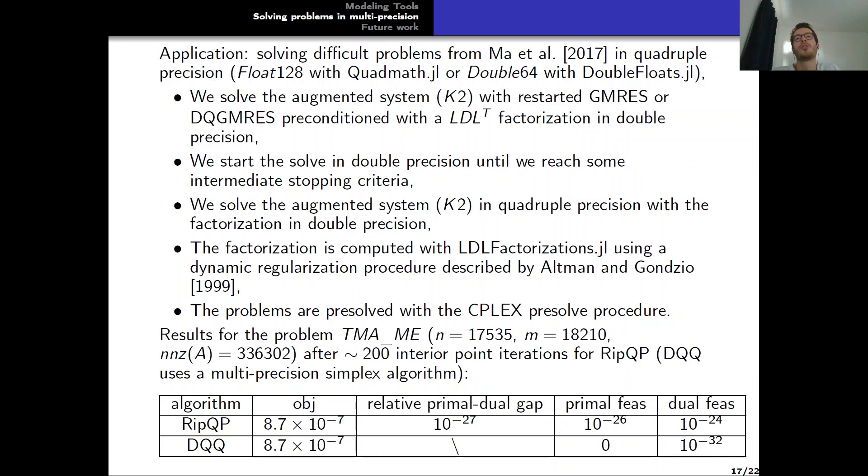The problems are pre-solved with a simplex pre-solve procedure. And so here I've shown some results on the first problem, which is TBMA-ME, after 200 interior point iterations for RipQP. So as we can see, the results and the residuals are quite small, but not as small as the one obtained by DQQ, which is the multi-precision simplex algorithm used in the article. However, the time made by RipQP to solve this problem was pretty small, because 200 interior point iterations is not a small number. And the fact that we performed 100 interior point iterations entirely in double precision made it even faster. So we consider that it is a good result.